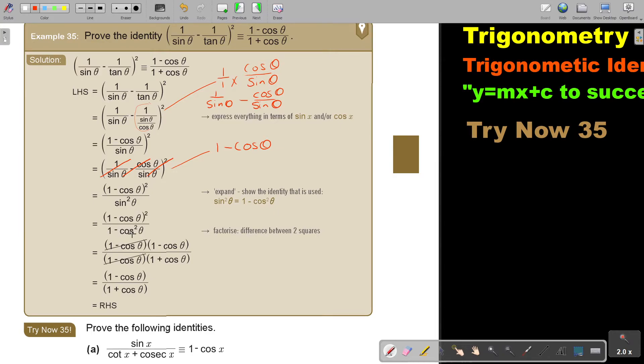And then, this is the difference between two squares. And I find the difference between two squares. And then, that cancel out. That is two identical brackets. That is the difference between two squares. That cancel out. And I'm left with this. And then, I say the left-hand side is equal to the right-hand side.